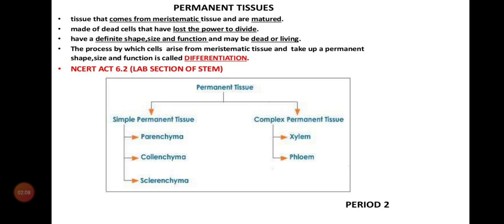So what is permanent tissue? It is the matured meristematic tissue only — matured tissues are permanent tissues. Once it becomes matured, it loses its power of division, that is why we call it permanent tissue.